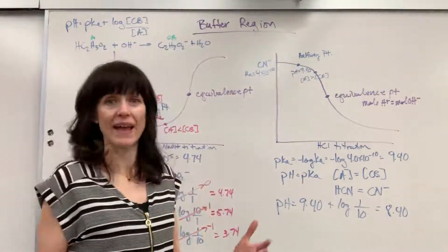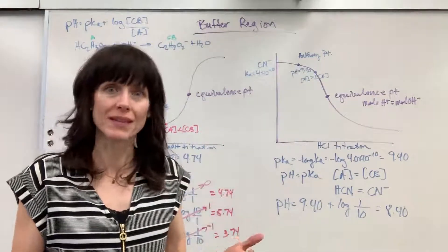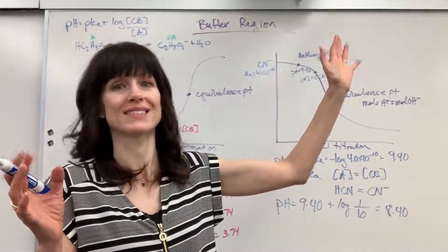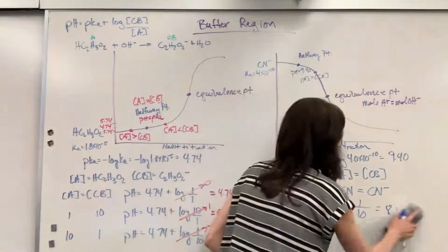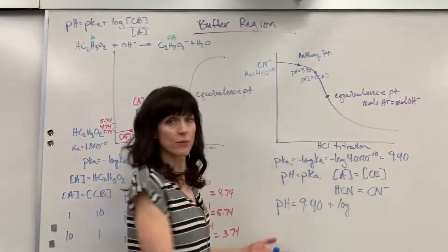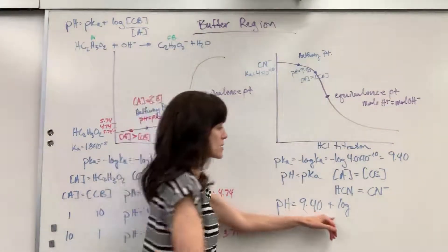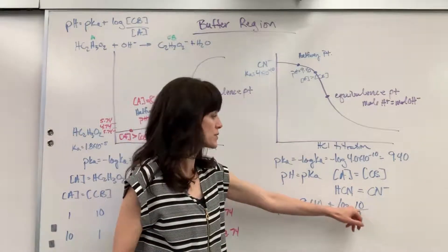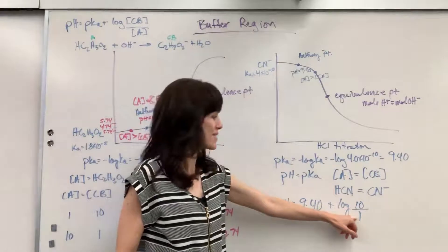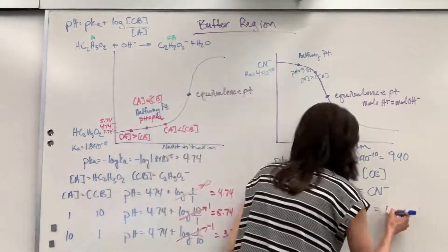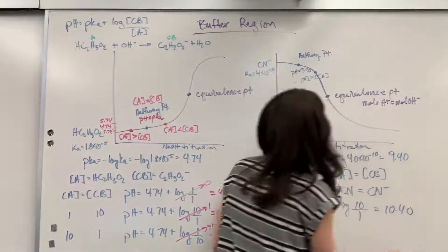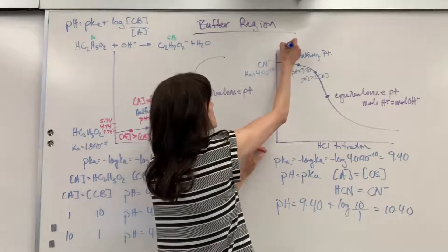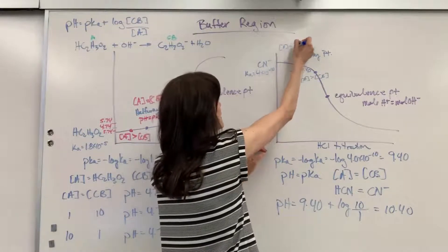What if I have more conjugate base? If I have more conjugate base, the pH is going to be higher. Let's plug it in: pH equals 9.40 plus log of (10/1). Log of 10 is 1, so pH equals 10.40. That would be up here where the acid is less than the conjugate base — more conjugate base pulls the pH up.